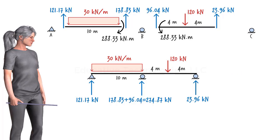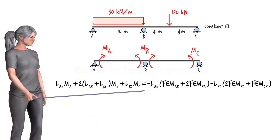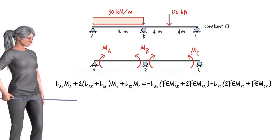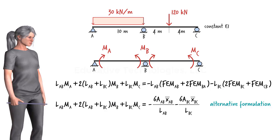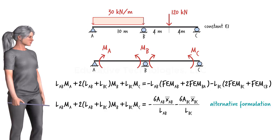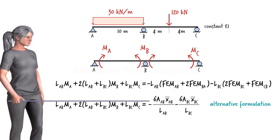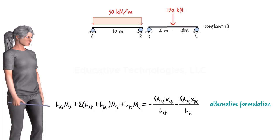There is an alternative three-moment equation worth mentioning. Here is the one we just derived, in which the right side is expressed in terms of fixed-end moments. Here is the alternative equation. Note that the two equations are identical on the left side but differ on the right side. While one equation is defined in terms of fixed-end moments, the other requires the use of the area under the moment diagram for each beam segment and the distance from the center of the diagram to the nearest end of the beam.